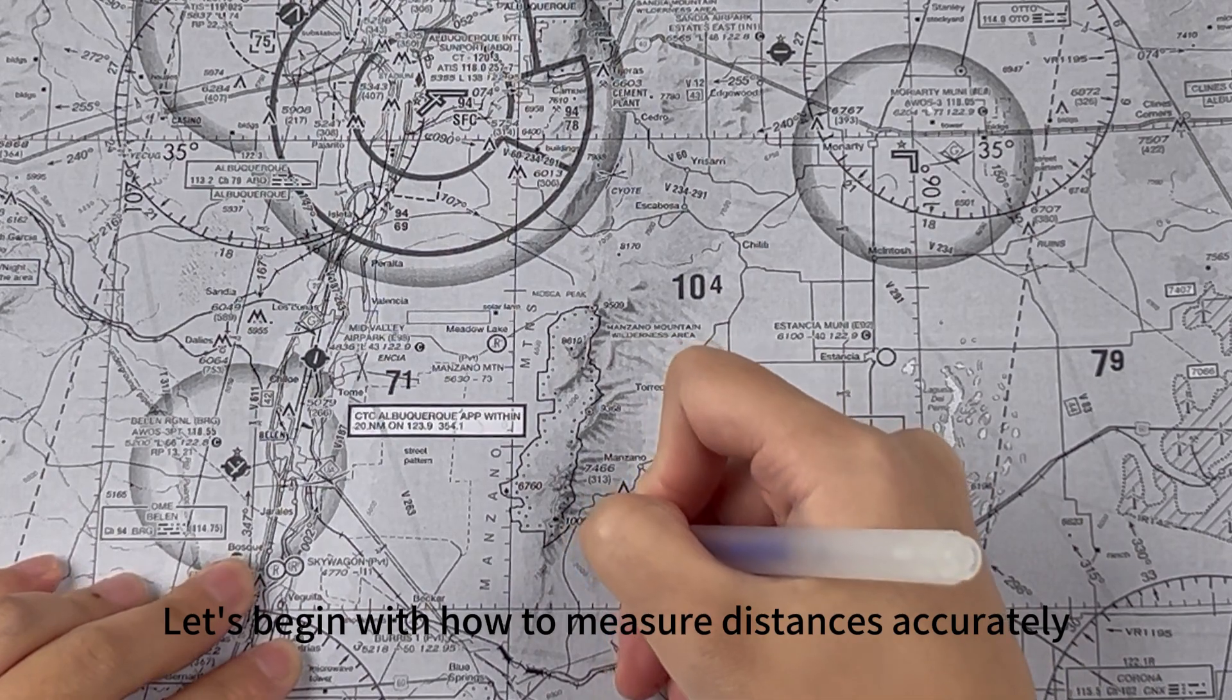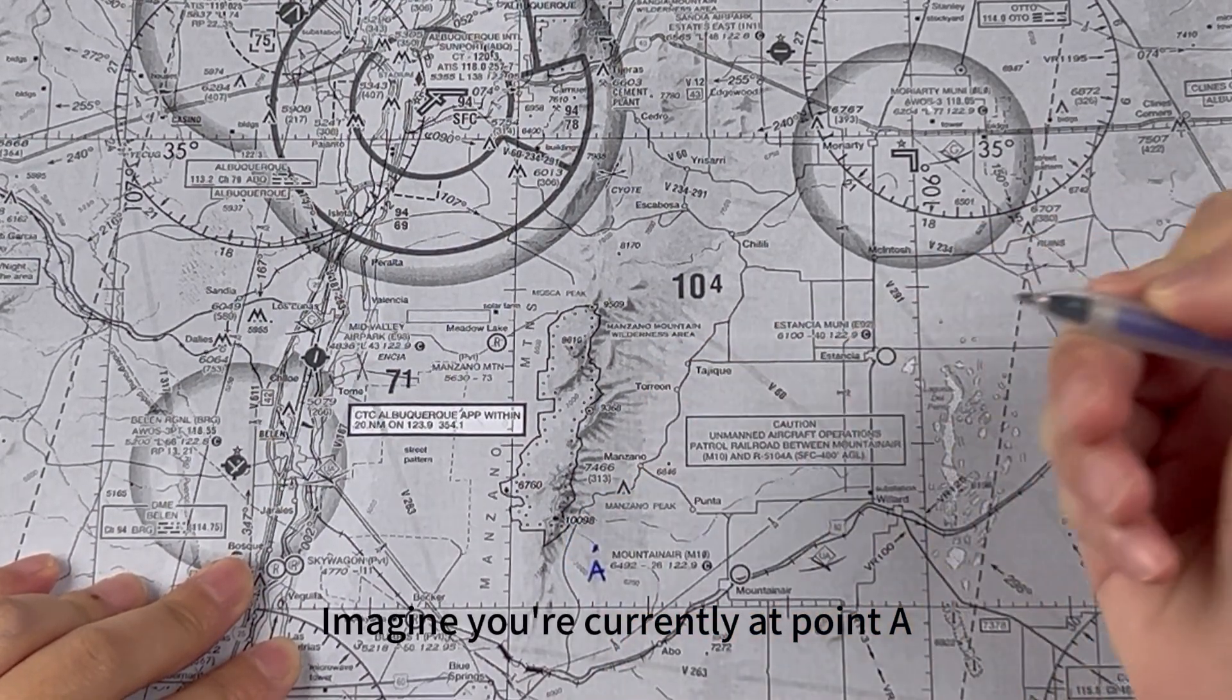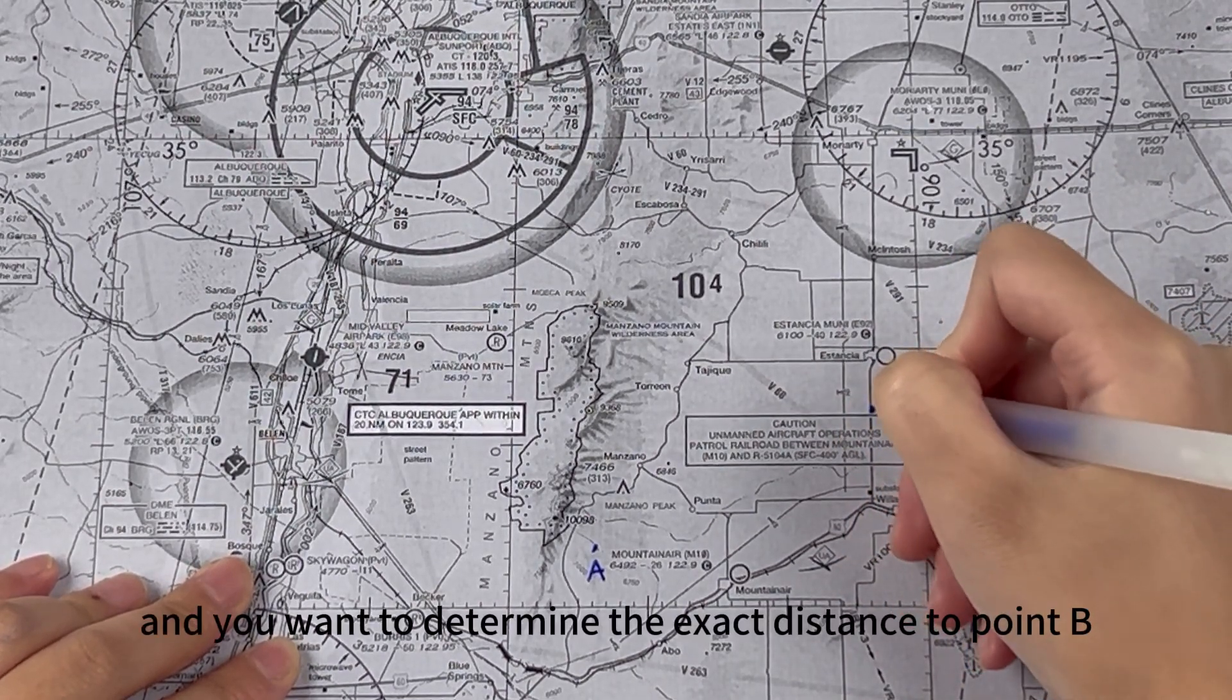Let's begin with how to measure distances accurately. Imagine you're currently at point A, and you want to determine the exact distance to point B.